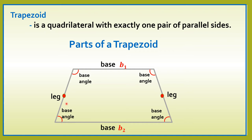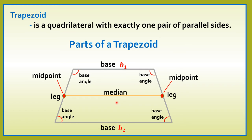Let us draw here midpoints. If you're going to connect two midpoints, the line or the segment connecting the two midpoints, we call it median. Let us draw here another line perpendicular to this side, and it forms a right angle. This line, we call it altitude.